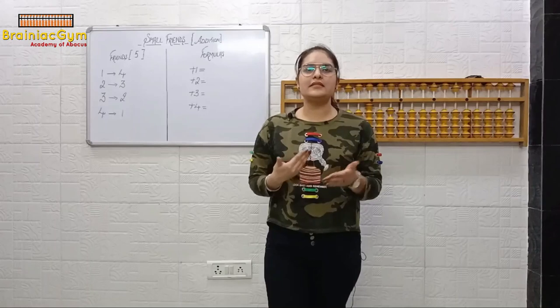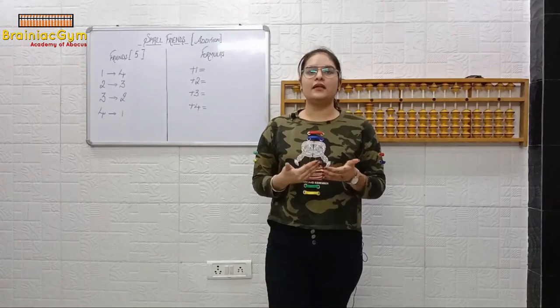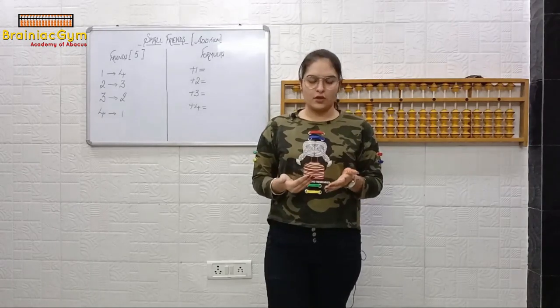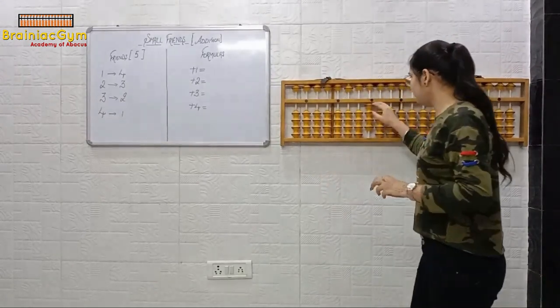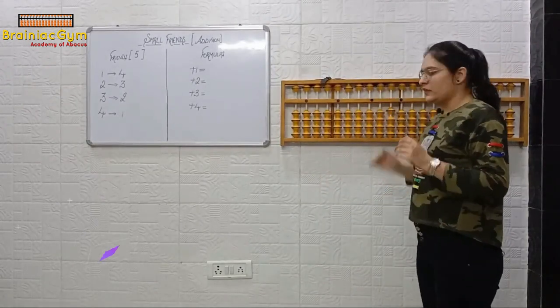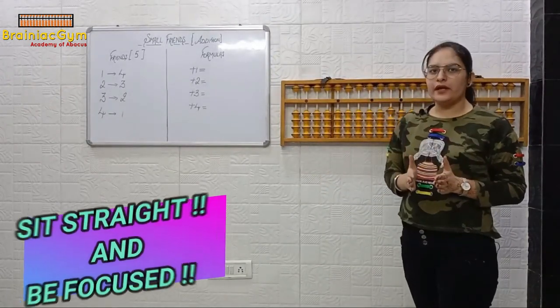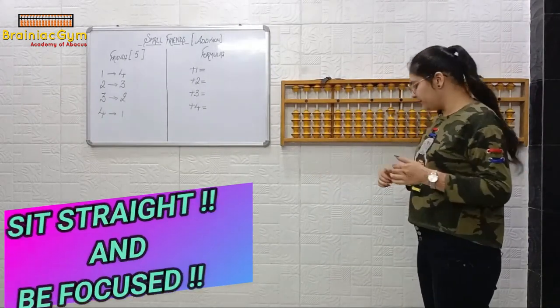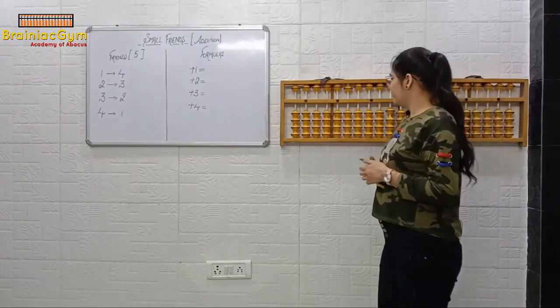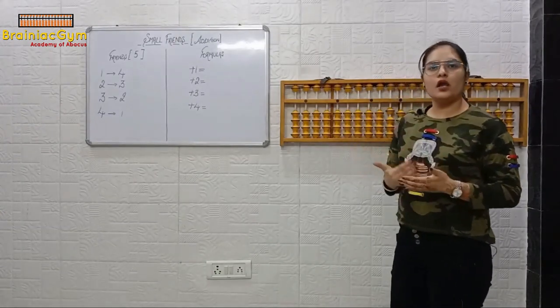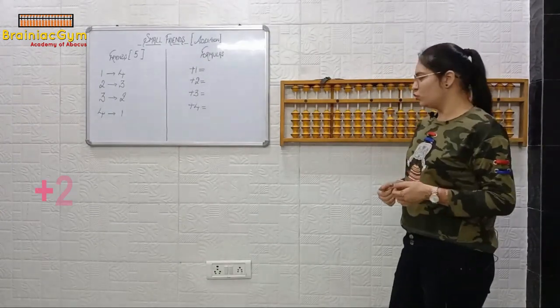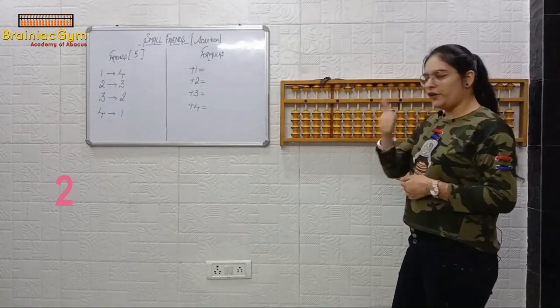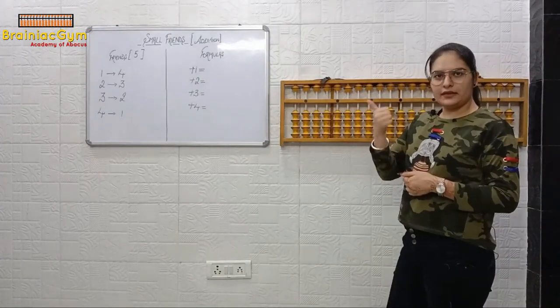Small friends — now let's just understand the formulas, okay, so just pay attention here. Sit straight and be focused. Do the thumb along with me on your abacus: plus two fingers, thumb.